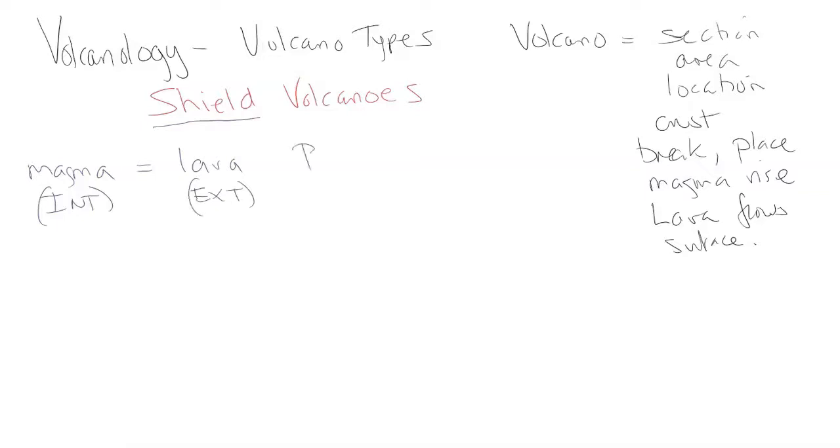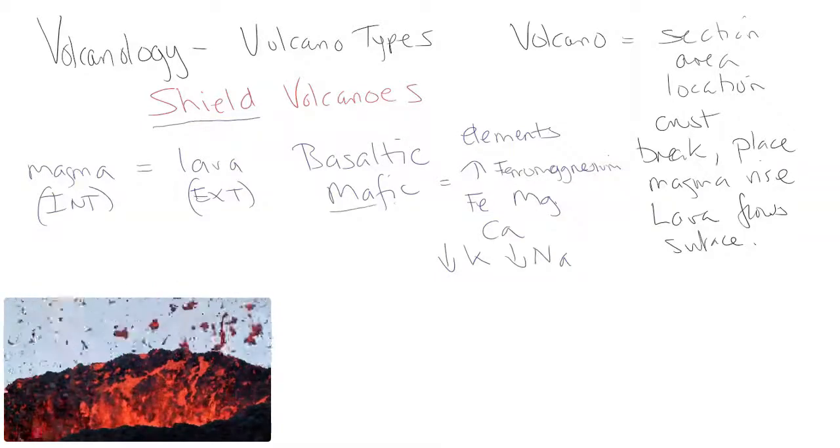Looking at basaltic magma or lava. Basaltic characteristics: first it's mafic or mathic, which means it is high in ferro-magnesium. It's high in iron, it's high in magnesium, it's high also in calcium. However, because it's mafic on a scale of elements and how much of each element is in the magma, it's also low in potassium and low in sodium. That's the general makeup of elements you find in basaltic magma. We call this mafic or mathic.